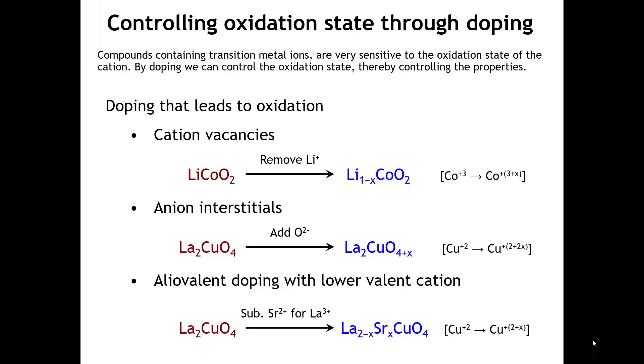Something quite interesting happens when we do aliovalent doping in transition metal compounds. Transition metals typically have variable oxidation states, and in these materials, oftentimes the way that the structure compensates for the aliovalent doping is to change the oxidation state of the transition metal ion.